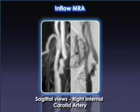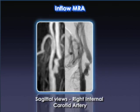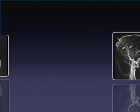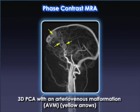The inflow MRA technique is based on the enhancement of flowing blood and suppression of stationary tissue in a limited volume. This technique relies on refreshed blood flowing into a slice or volume, thus providing a bright signal. Phase contrast MRA (PCA) relies on the phase of moving blood and not the inflowing effect into a slice or volume.